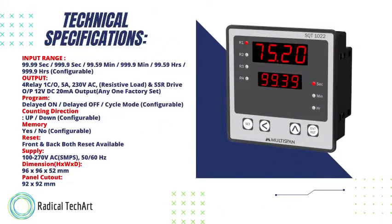Looking at its specifications. Technically, input range is selectable in second, minute, and hours — 99.99 — and you can select a decimal point as per your application. Output is 4 relay. In this you have 3 modes: delay on, delay off, and cycle mode. Counting direction is up or down configurable. Memory is yes or no configurable. Front and back both reset available. Supply voltage is between 100 to 270 volt AC, 50 to 60 hertz frequency. Dimensions of this model is 96 by 96 and the panel cutout is 92 by 92 mm.